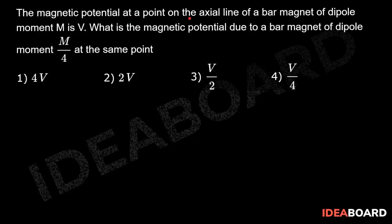The magnetic potential at a point on the axial line of a bar magnet of dipole moment capital M is V. What is the magnetic potential due to a bar magnet of dipole moment m by 4 at the same point?